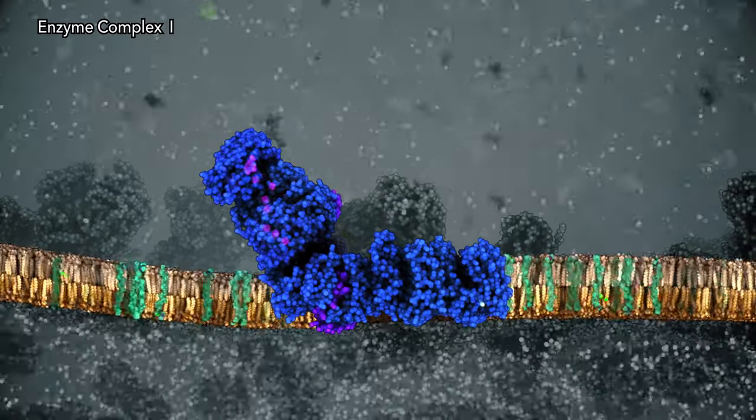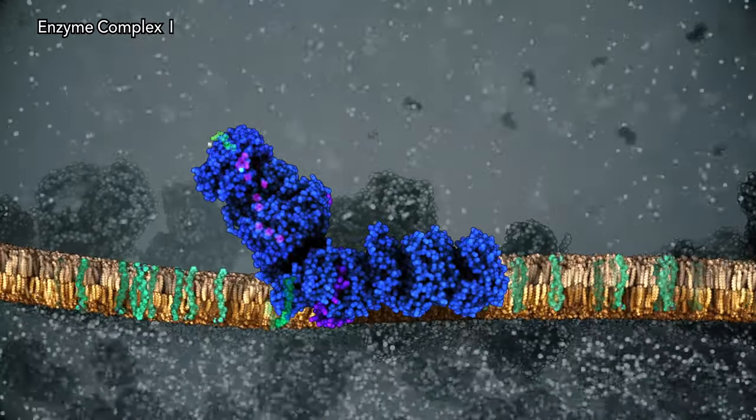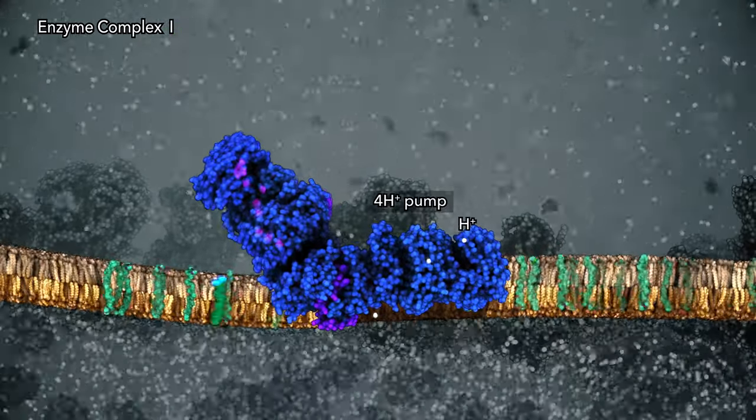The movement of charged electrons through complex 1 makes it bend in shape, transmitting energy for pumping four protons across the membrane.